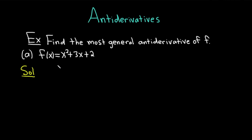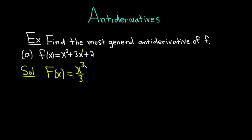So the process of finding an antiderivative is called antidifferentiation — basically, it's the opposite of differentiation. There are a couple of rules we can use. I'm going to call our antiderivative big F of x. Whenever you have x to a power, you basically just add 1 to the exponent and divide by the result.